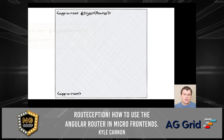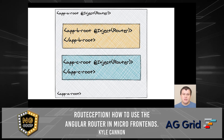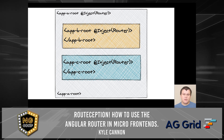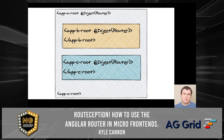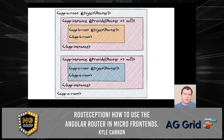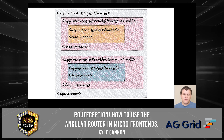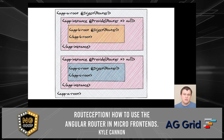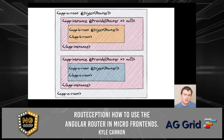Each time an element is created, an element injector is created as well. Each element injector in return has access to the parent element injector. The dependency injection system will walk up the tree until it finds the matching token and return the value if possible. To short-circuit the dependency resolution to the router guard, we need to create a new provider for the router token that sets the value as null. We can do this by utilizing a static injector that sits between our new application and the host application.